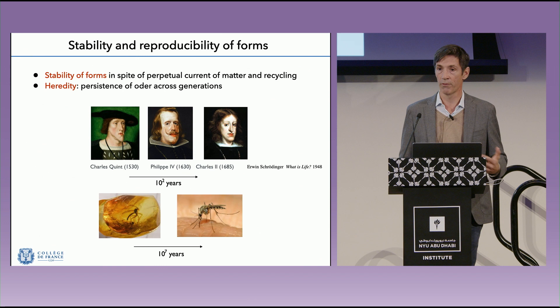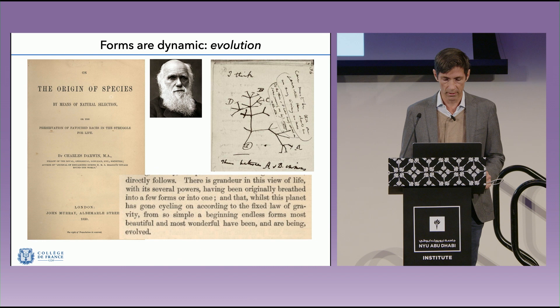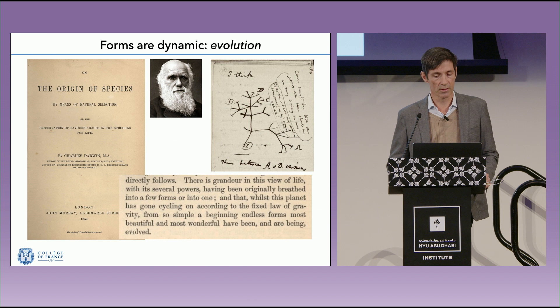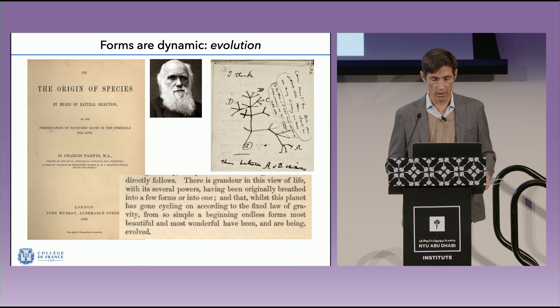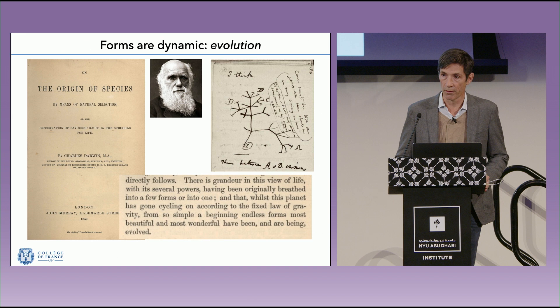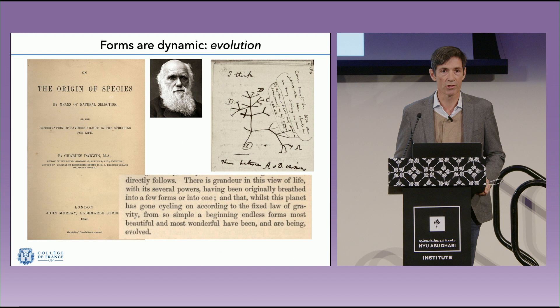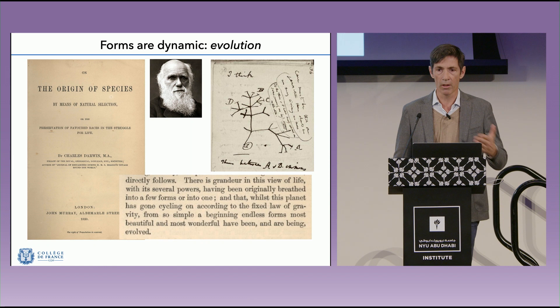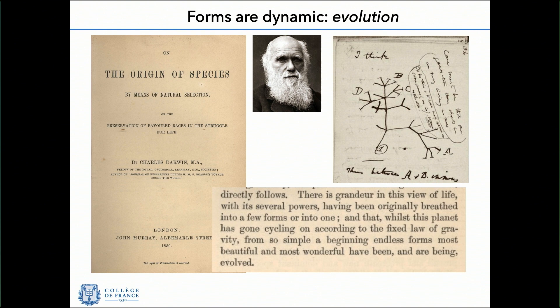On top of stability, forms are also dynamic. There is dynamics on the timescales of evolution — something we have known since Darwin, but actually pioneered by Lamarck at the beginning of the 19th century. Lamarck coined the word 'biology,' which didn't exist before his time — before that there were only the natural sciences. With Lamarck and Darwin we came to think about the evolution of species. As Darwin wrote in the famous last sentence of 'On the Origin of Species': 'from so simple a beginning, endless forms most beautiful and most wonderful have been, and are being, evolved.'